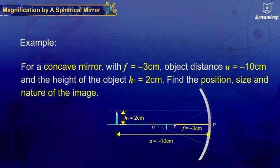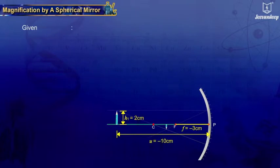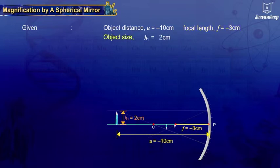Find the position, size, and nature of the image. Given object distance U equals to minus 10 cm, focal length F equals to minus 3 cm.